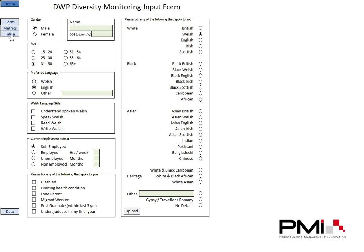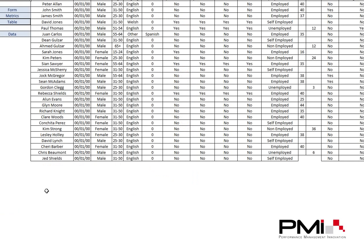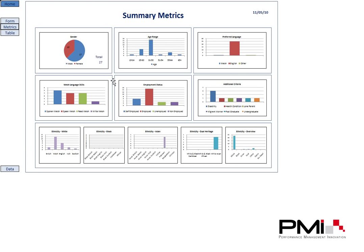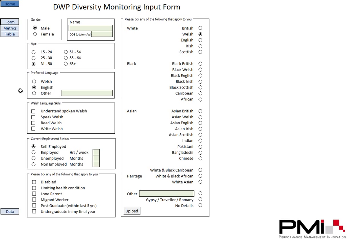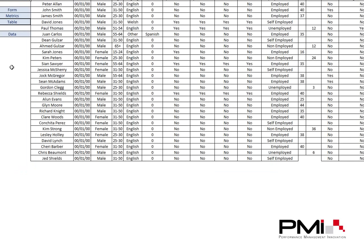If we go and have a look at the table, we can see the entries are automatically being added. And if we have a look at the metrics, we've now gone from 26 up to 27 and from 16 to 17 male. So as you can see, by adding the information in a very simple format, we are automatically updating all the metrics and all the tables so everything is completely live.